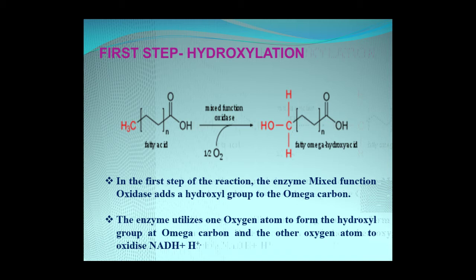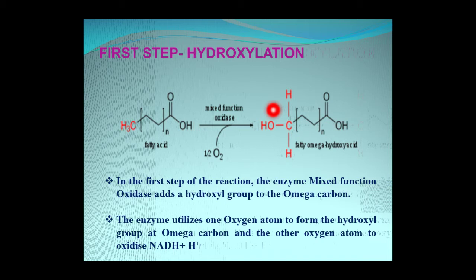In the first step of omega oxidation of fatty acid, the hydroxylation reaction occurs. The enzyme mixed function oxidase adds a hydroxyl group to the omega carbon, which is the farthest from the carboxylic end of the fatty acid. The enzyme mixed function oxidase utilizes one oxygen atom to form the hydroxyl group at the omega carbon, and the other oxygen atom is utilized to oxidize NADH plus H+.